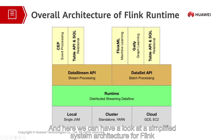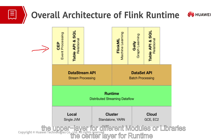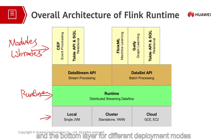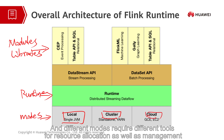Here we can have a look at a simplified system architecture for Flink. Similar to the system architecture of Spark, the architecture of Flink can also be divided into three layers: the upper layer for different modules or libraries, the center layer for runtime, and the bottom layer for different deployment modes. Like Spark, we can deploy Flink in a single-node system, a cluster, or on the cloud. Different modes require different tools for resource allocation and management.